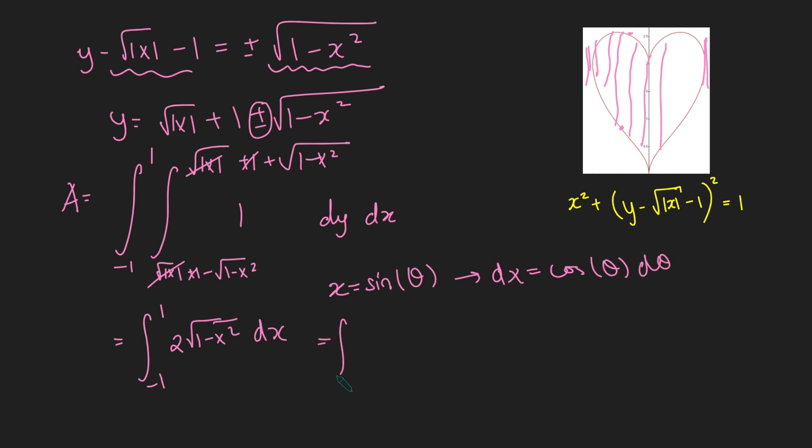And so this integral here just becomes the integral from, well, when x is minus 1, sine of theta would have to be minus pi over 2. And the upper limit would be pi over 2. And we've got two lots of the square root of 1 minus x squared. So that's 1 minus sine squared theta, which is square root of cos squared theta, which is cos theta.